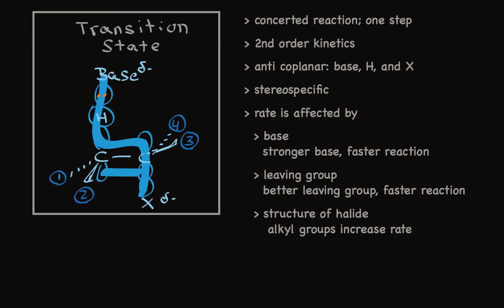And recall that alkyl groups stabilize alkenes. The fewer hydrogens and the more alkyl groups, the more stable the alkene. So what we're saying is here, the more alkyl groups attached to the carbons, the more alkyl groups will be attached to the alkene. And alkyl groups stabilize alkenes. So the reaction is faster.